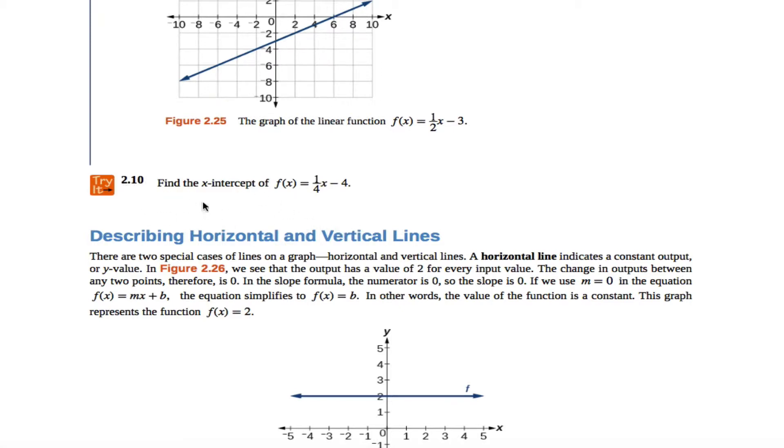All right, try problem 2.10. We're asked to find the x-intercept of f(x) equals one-fourth x minus 4. There are lots of ways you can do this problem. The easiest way to do this problem is to do it algebraically.